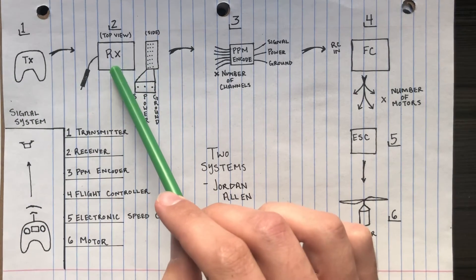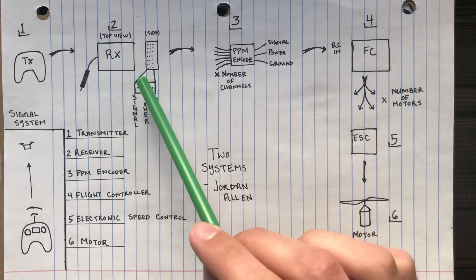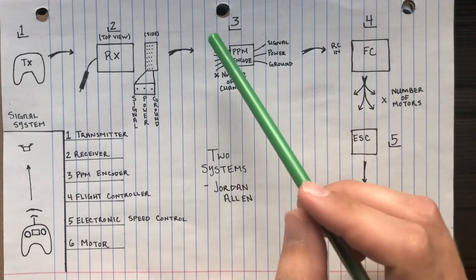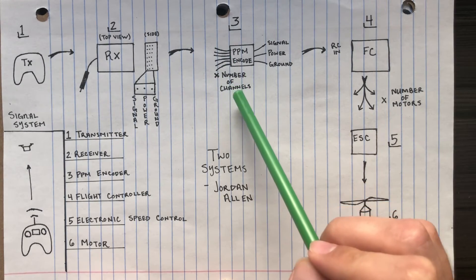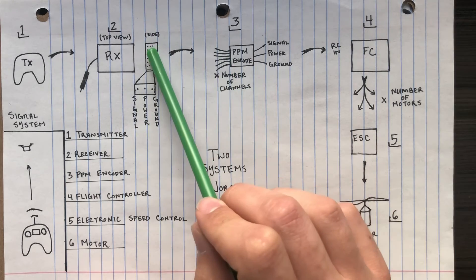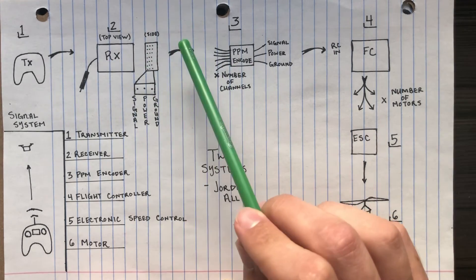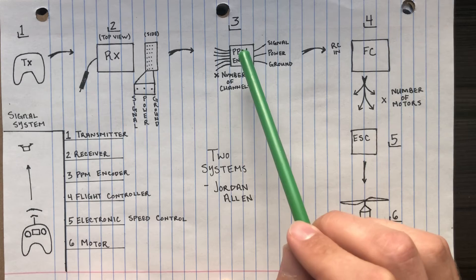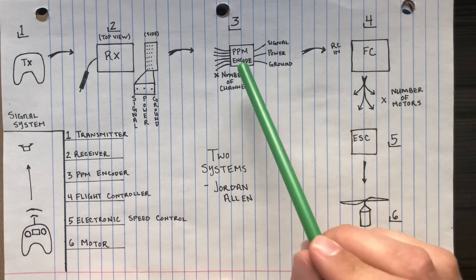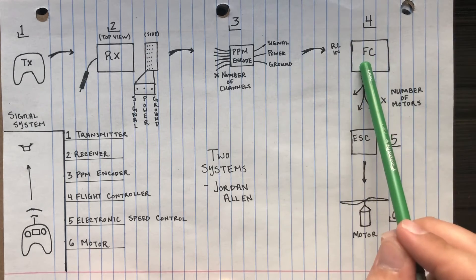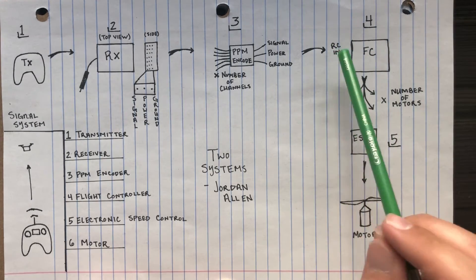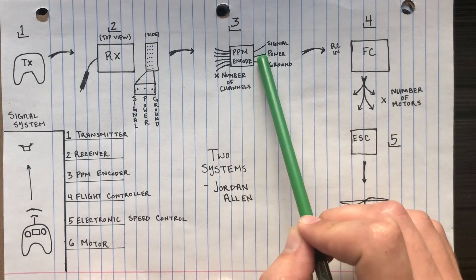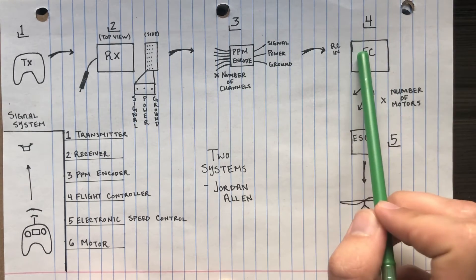So once the receiver receives a signal, it will send what the signal was in the proper channel to a PPM encoder. Now the PPM encoder is connected however many number of channels you have. So if you have five channels, there's five wires connected to the receiver. So the PPM encoder will receive whatever number of channels you have, and then it will send it to the flight control. The reason you need this PPM encoder is because the flight controller only has one input, the RCIN. So you need the PPM encoder to take all these channels and put it into a single channel or single pipe as you put it in your video and send it to the flight control.